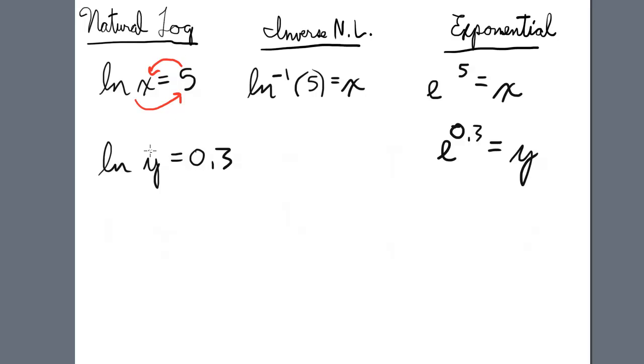And then we take the natural log format, ln of y is 0.3, reverse the order of these numbers. So inverse natural log of 0.3 equals y.